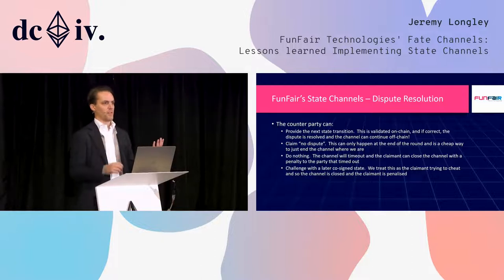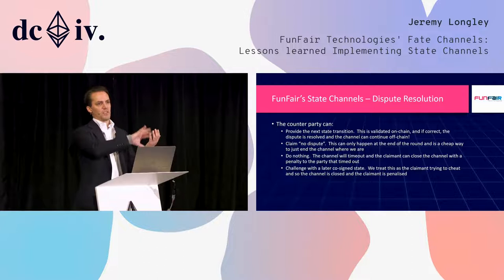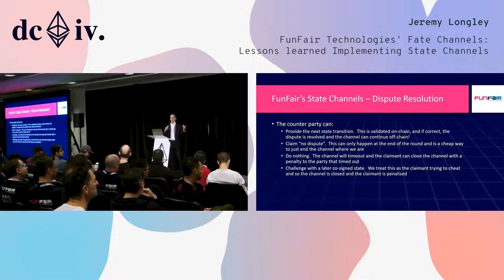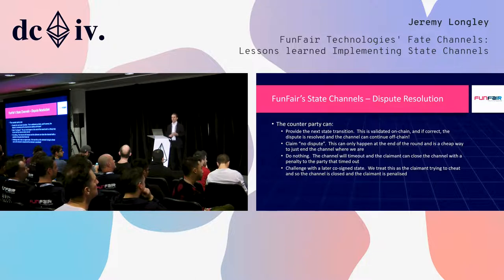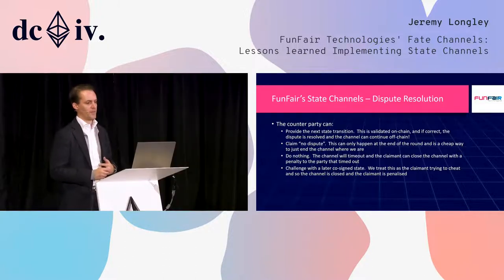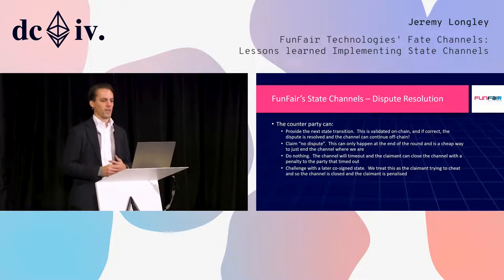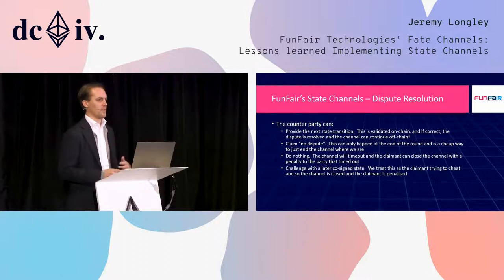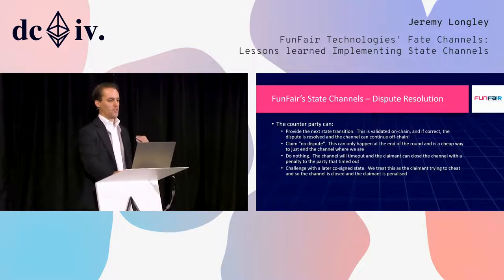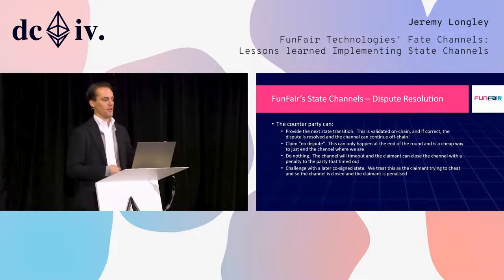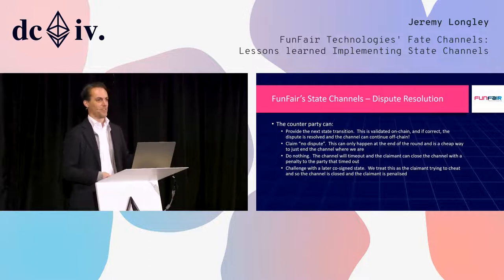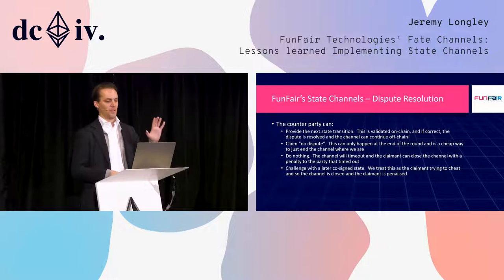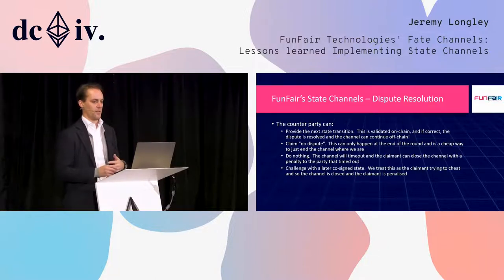The counterparty can acknowledge the problem and provide the next state transition. If that's validated on chain, we have a great side effect — we can actually carry on from that point off chain and complete the contract. The counterparty can also agree to close the channel where we are, do nothing if their laptop has blown up or they've gone on holiday — in which case the channel times out and the claimant can close the channel with a penalty to the party that timed out — or they can challenge with a later cosigned state. We treat closing with an earlier state as malicious, especially in casino games, so we apply a penalty to the person that put the earlier state on chain.